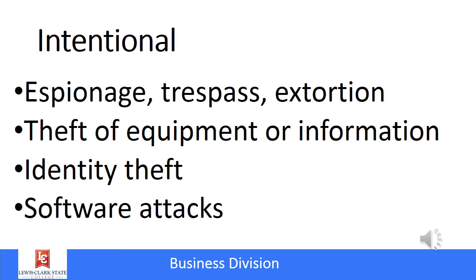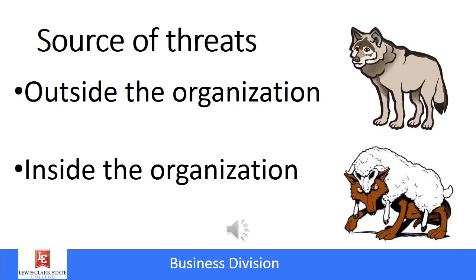Intentional threats also have a large variety. This slide lists some of those: espionage, many cases by government entities, trespass, extortion, theft of equipment, identity theft, and software attacks. It's important for companies and organizations to realize that threats can come from either outside or inside the organization, and companies need to have policies and procedures to combat both of these sources of threats.